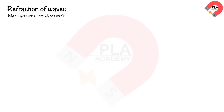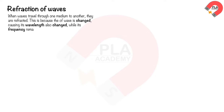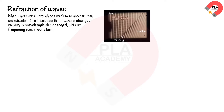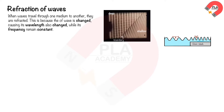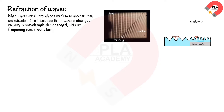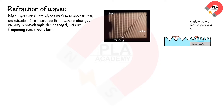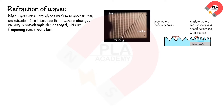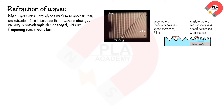Refraction of waves. When waves travel from one medium to another, they are refracted. This is because the speed of the wave changes, causing its wavelength to also change, while its frequency remains constant. In a ripple tank demonstration, water waves travel slowly in shallow water due to increased friction, so the wavelength decreases. The waves travel faster in deep water, so the wavelength increases.